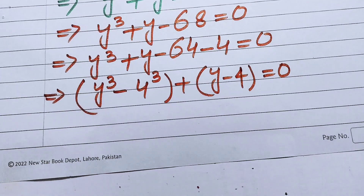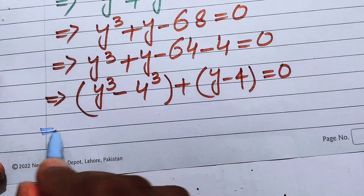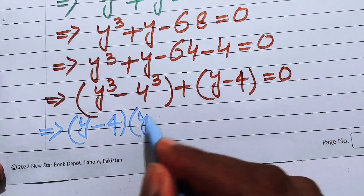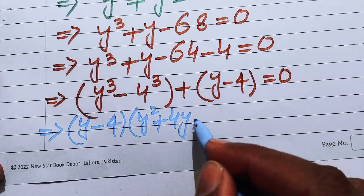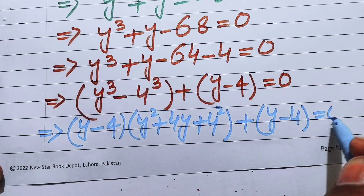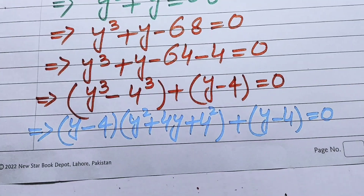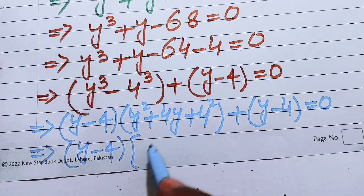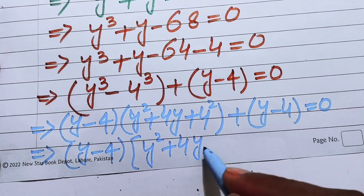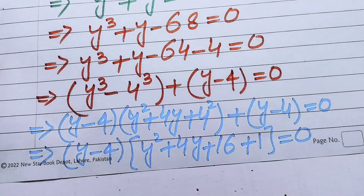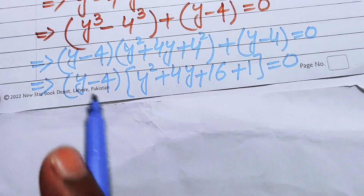We apply the difference of cubes formula: a cubed minus b cubed equals (a minus b)(a squared plus ab plus b squared). This gives us (y minus 4)(y squared plus 4y plus 16) plus (y minus 4) equals 0. Taking y minus 4 as the common factor: (y minus 4)(y squared plus 4y plus 16 plus 1) equals 0, which simplifies to (y minus 4)(y squared plus 4y plus 17) equals 0.